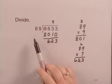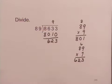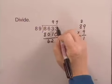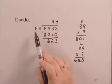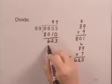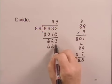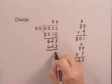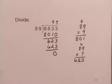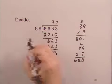We write the 7 above the 3. We write the product 89 times 7 under 623, and subtract, and our remainder is 0. So the answer is just the 97.